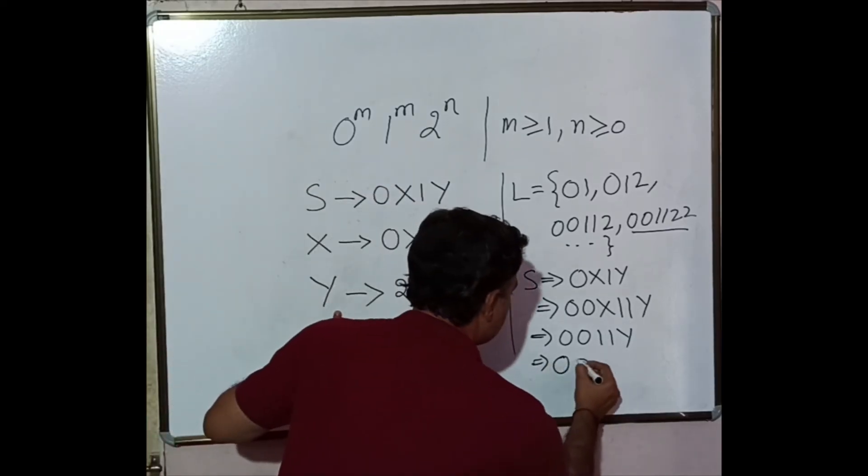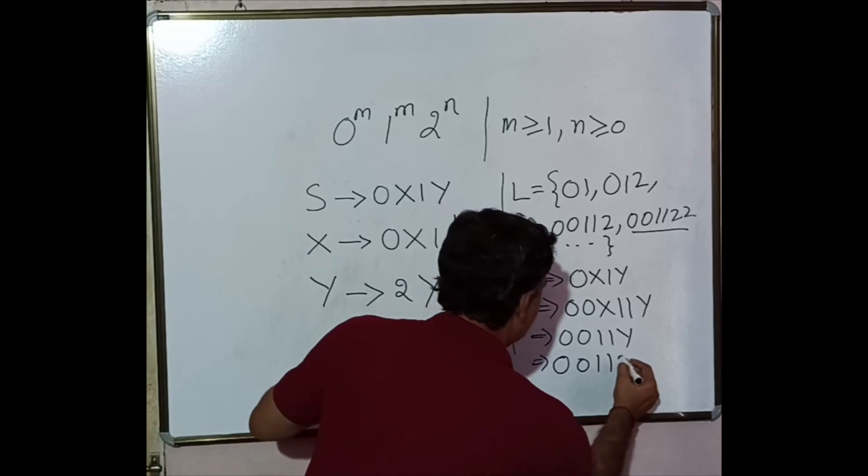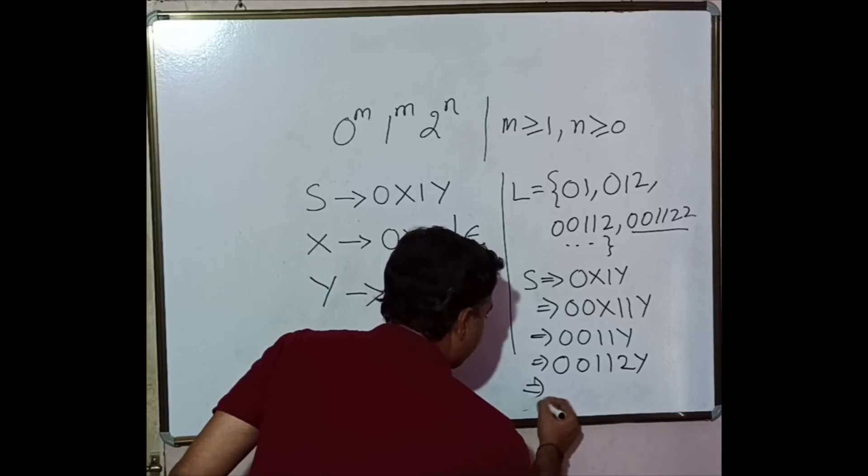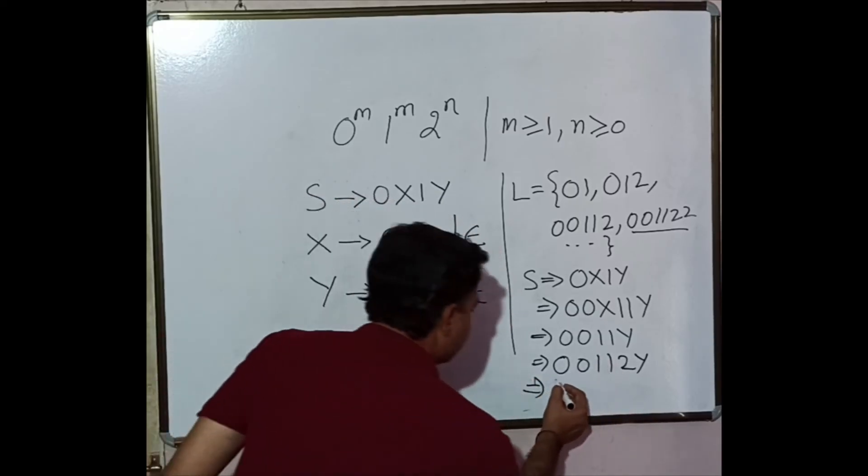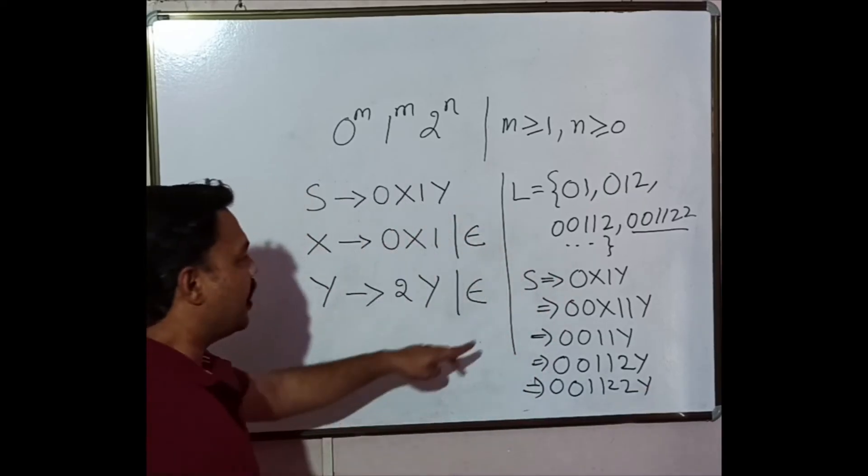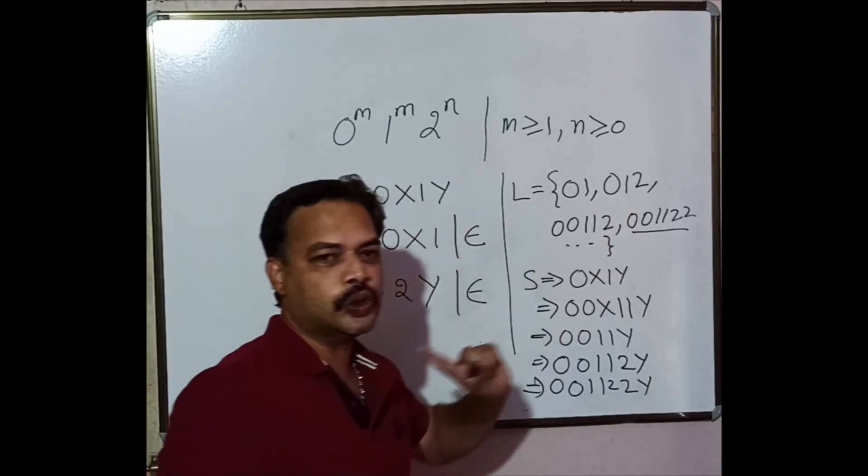Next let us use this particular rule. So 0, 0, 1, 1, 2, Y. I got one occurrence of 2. Next I got another occurrence of 2. That is 0, 0, 1, 1, 2, 2, Y. Now I got the string 0, 0, 1, 1, 2, 2.